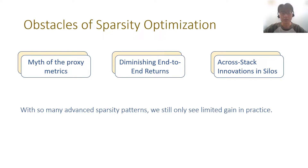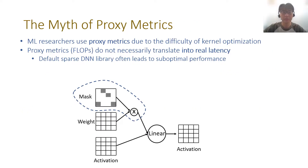We find three obstacles to sparsity optimization in practice. The first obstacle is the myth of proxy metrics. The learning curve for high-performance kernel optimization is quite steep for machine learning researchers. Therefore, the common practice is applying a mask tensor on the original weight tensor to simulate pruning behavior, and using a proxy metric such as FLOPs to evaluate compression algorithms. However, such proxy metrics do not translate into real performance benefits directly. For example, 50% sparsity in a fine-grained sparsity pattern can reduce FLOPs by 50%, but it does not reduce latency by 50%. Besides, the default general sparsity kernel often leads to suboptimal performance and cannot reflect the real potential speedup of the target sparsity pattern.